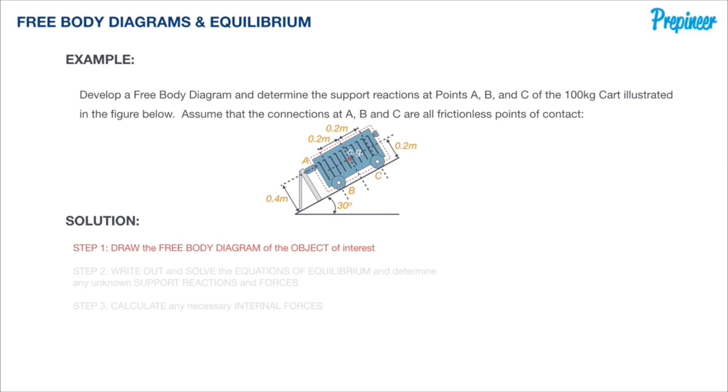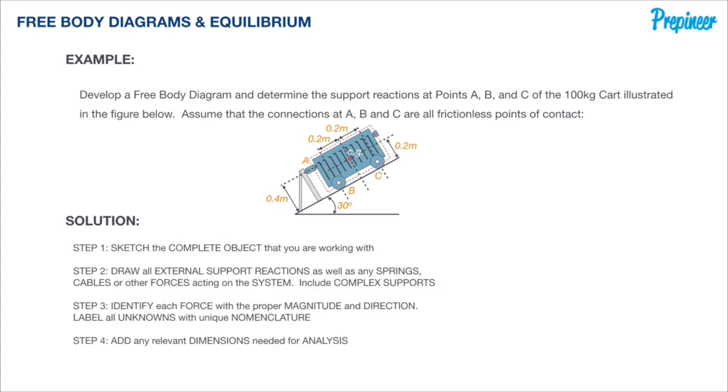I've highlighted with a red dotted line our cart—this is our object of interest. When defining our free body diagram, there's a four-step process: sketch the complete object that you're working with, draw all external support reactions as well as any springs, cables, or other forces acting on the system, identify each force with the proper magnitude and direction and label all unknowns with unique nomenclature, and then add any relevant dimensions needed for analysis.